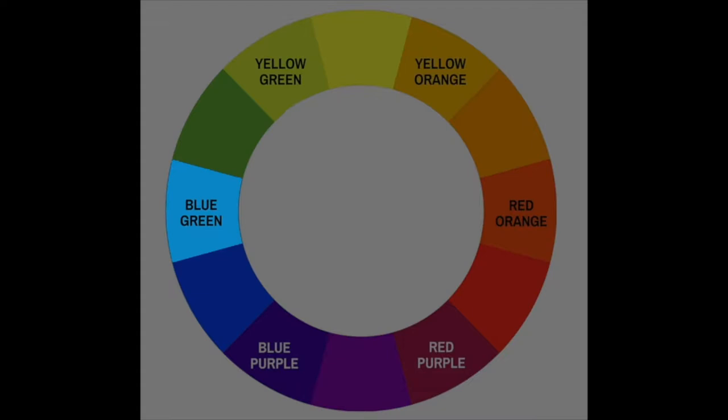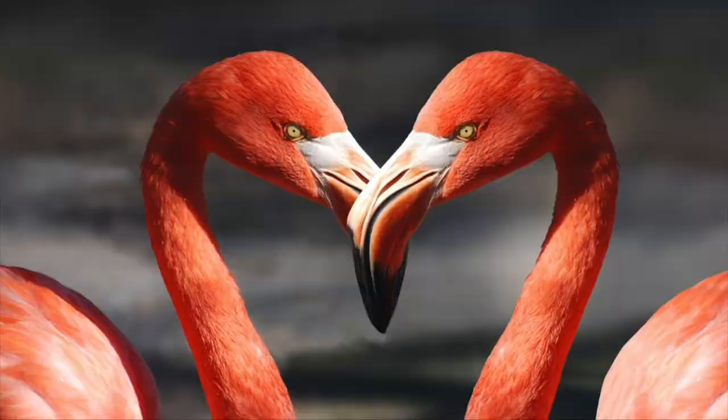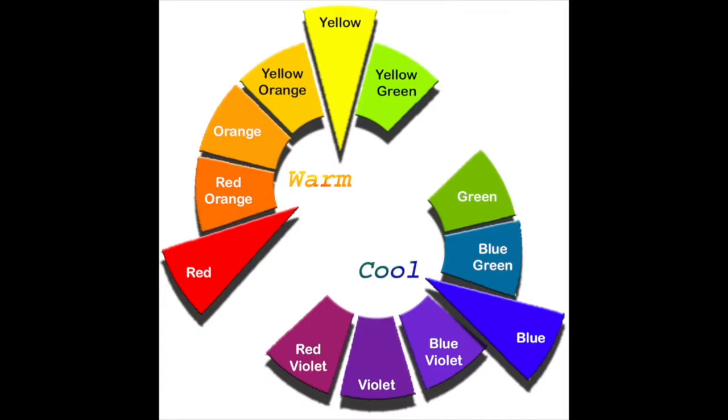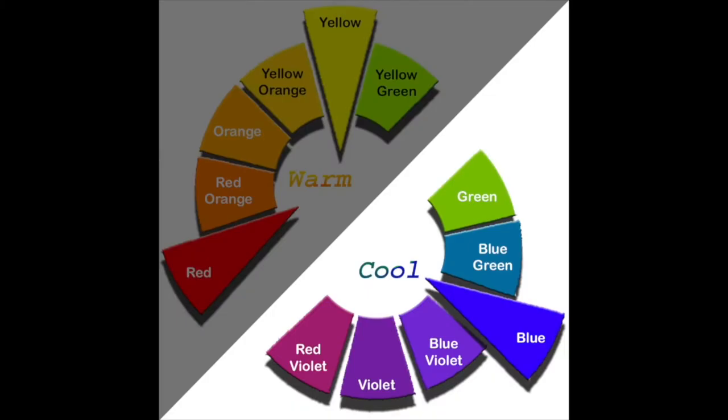Colors can affect our feelings. They can make us feel happy, angry, sad, or inspire feelings of love. Colors are grouped into two main groups known as warm colors and cool colors. Usually, warm colors are bright and make us feel happier. Cool colors make us feel calm and sometimes sad.